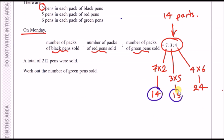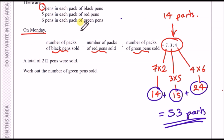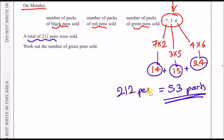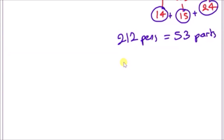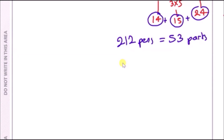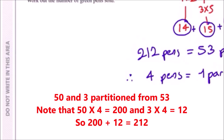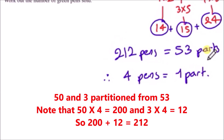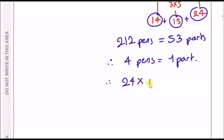A total of 212 pens were sold. These 53 parts equal 212 pens. To find one part: 212 ÷ 53 = 4 (since 4 × 50 = 200 and 4 × 3 = 12). To find green pens sold: 24 × 4 = 96 green pens actually sold.